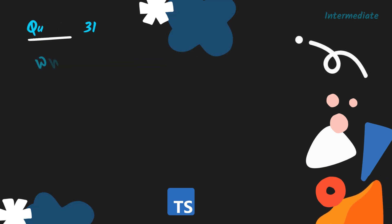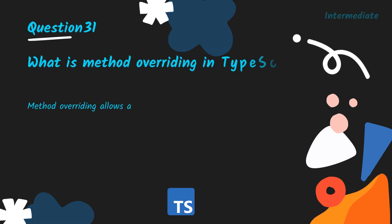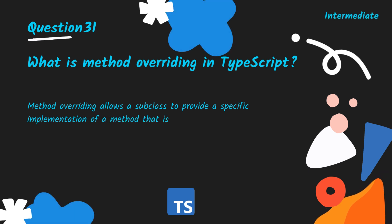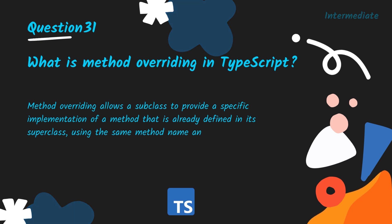What is method overriding in TypeScript? Method overriding allows a subclass to provide a specific implementation of a method that is already defined in its superclass, using the same method name and parameters.